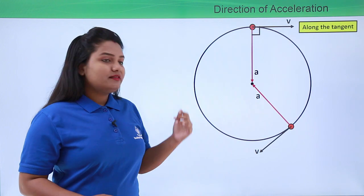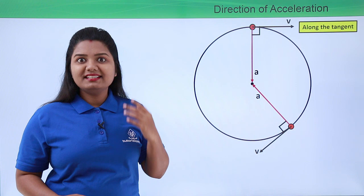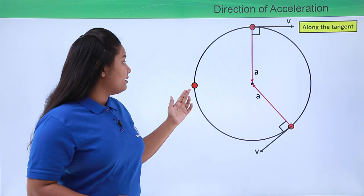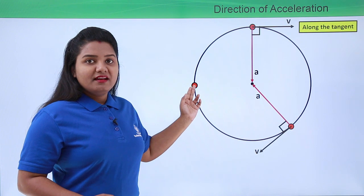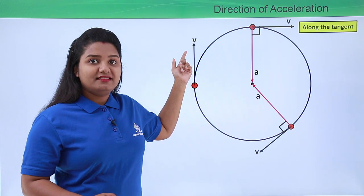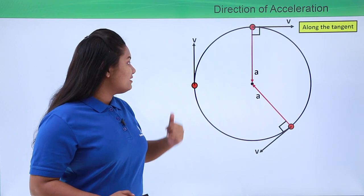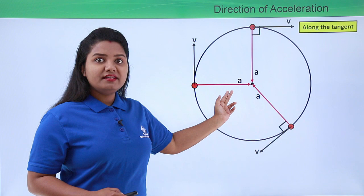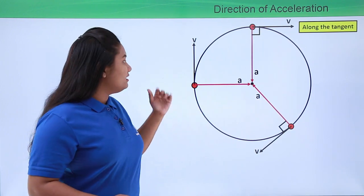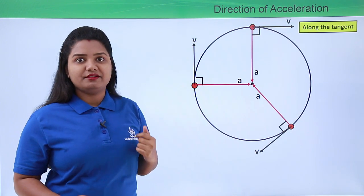Even in this case, the acceleration and velocity are perpendicular to each other in direction. Suppose the body is located at yet another point — the velocity direction will be along the tangent at that point, and the direction of acceleration will be along the radius towards the center. So again, velocity and acceleration are perpendicular to each other.